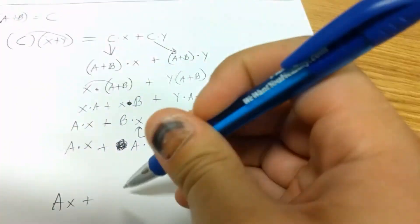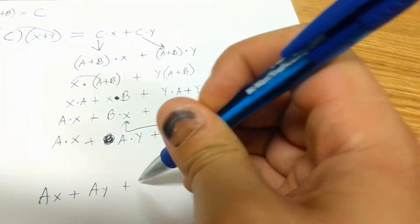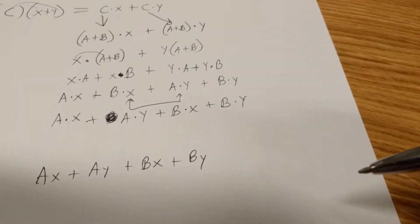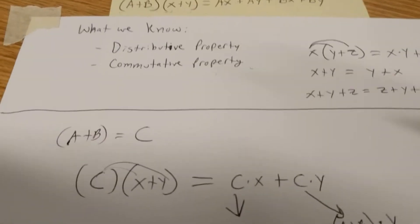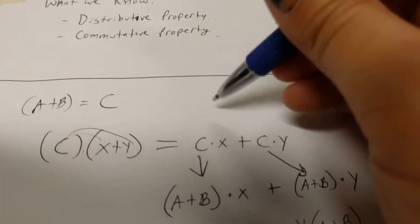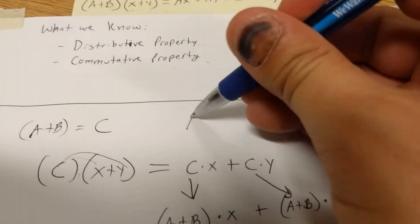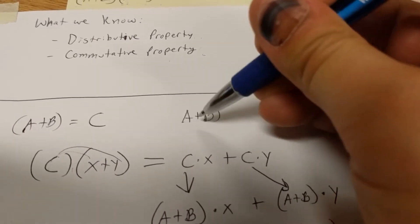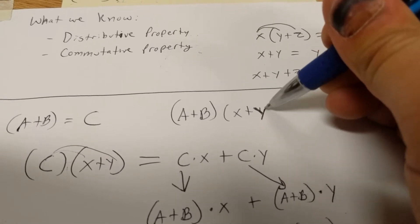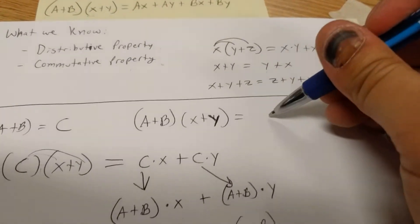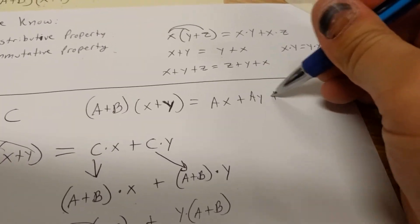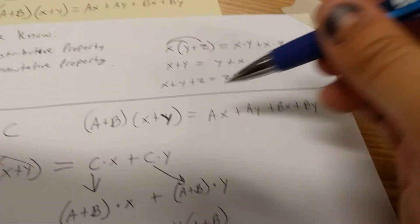So we started initially up here. I didn't actually write it up front, so this is what we're actually trying to prove: a plus b times x plus y equals ax plus ay plus bx plus by. This is the thing that we were trying to prove.